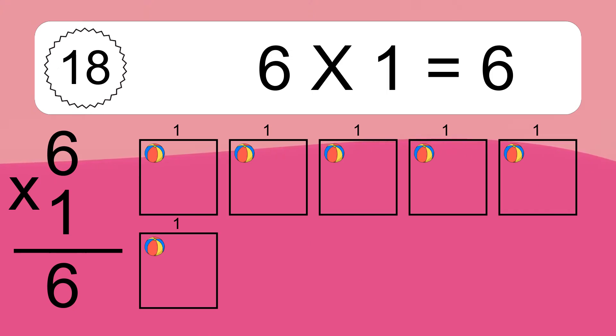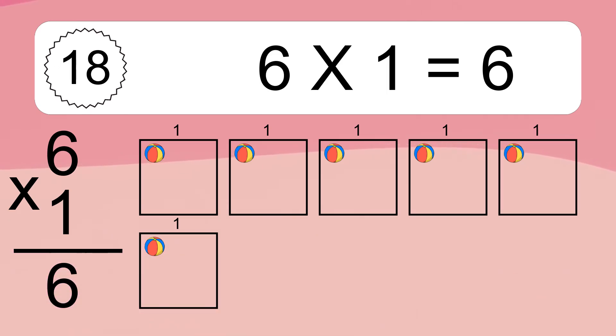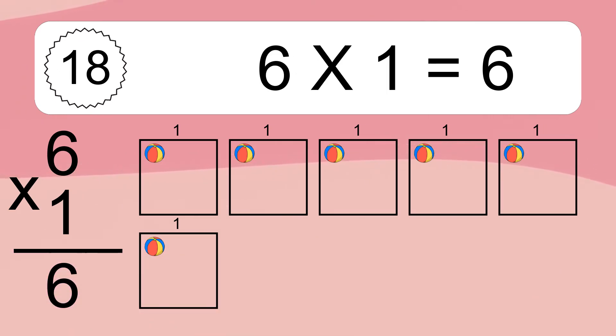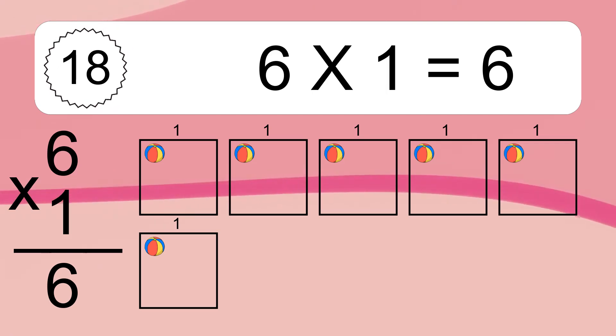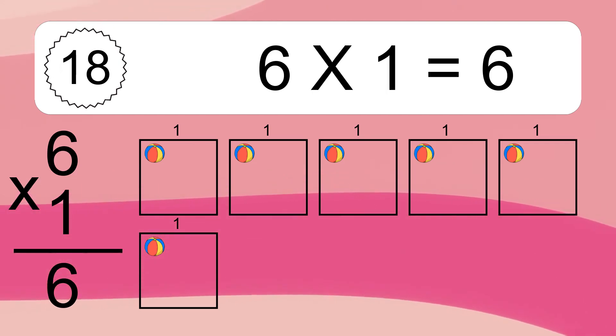We have 6 boxes, and each box has 1 colorful ball inside. If you count all the balls in all the boxes together, you will have 6 times 1 balls. This equals 6 balls.